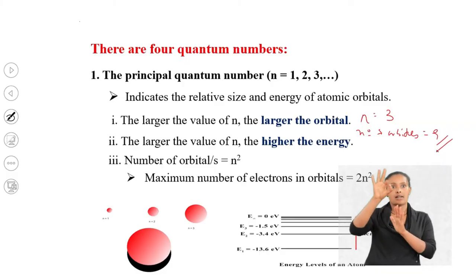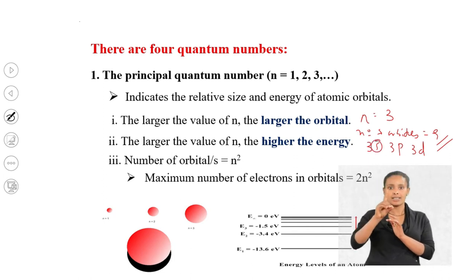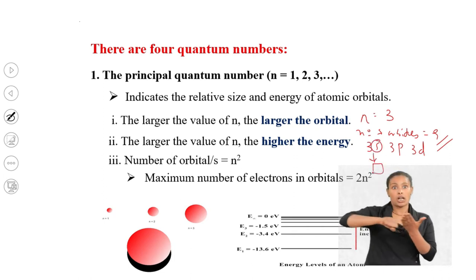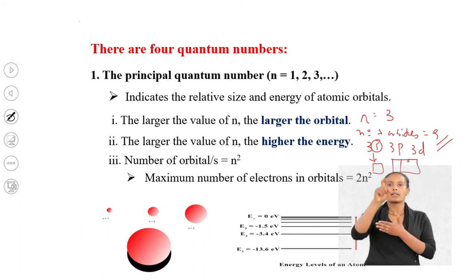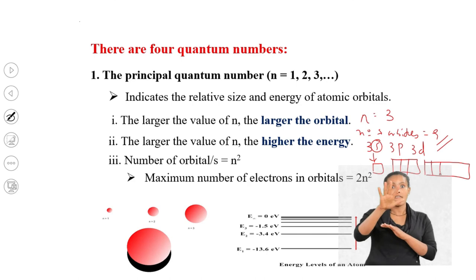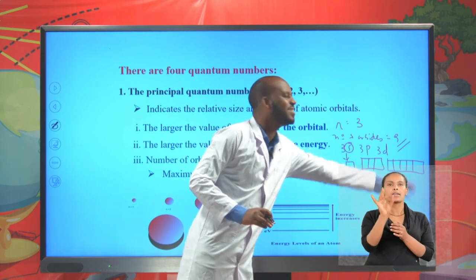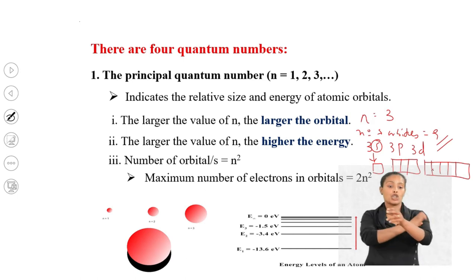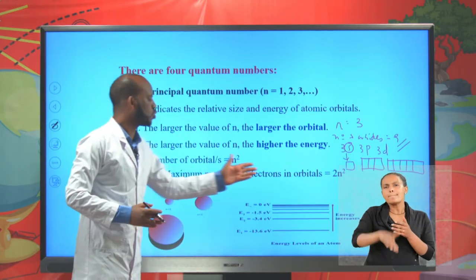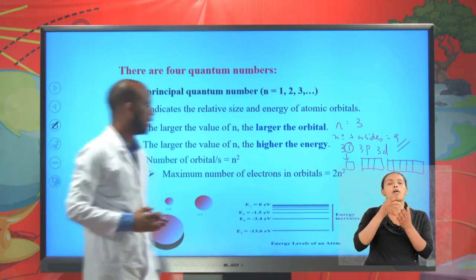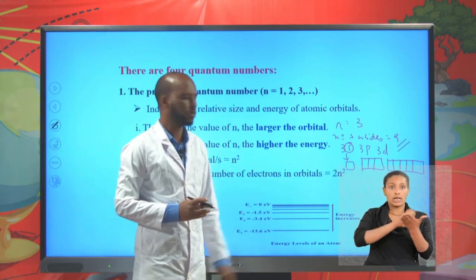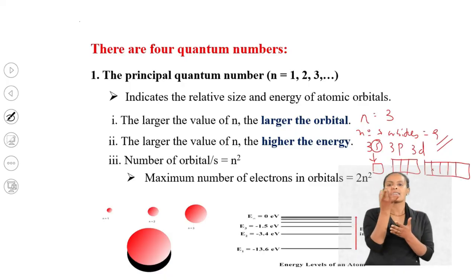For n = 3, the subshells are 3s, 3p, and 3d. The s subshell has 1 orbital, the p subshell has 3 orbitals (px, py, pz), and the d subshell has 5 orbitals — giving a total of 9 orbitals. Since each orbital accommodates a maximum of 2 electrons, the 9 orbitals accommodate a maximum of 18 electrons, consistent with 2n² = 2 × 9 = 18.